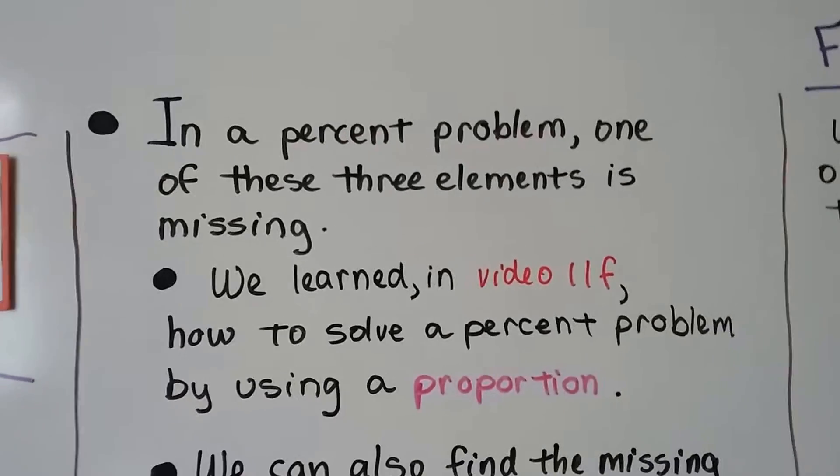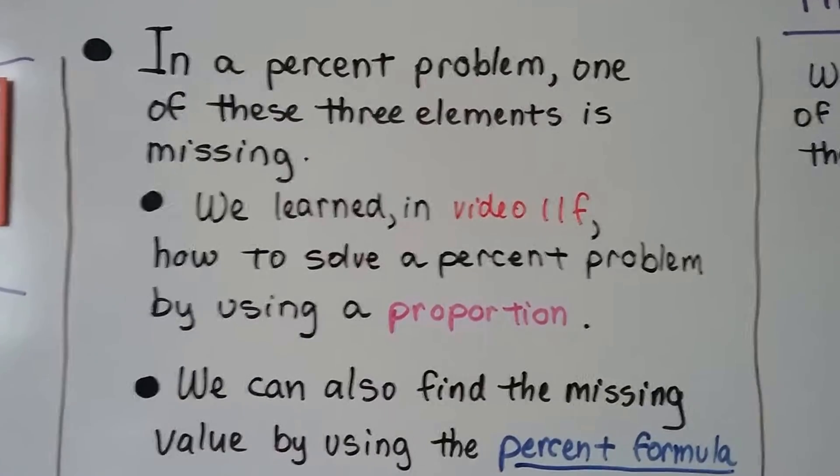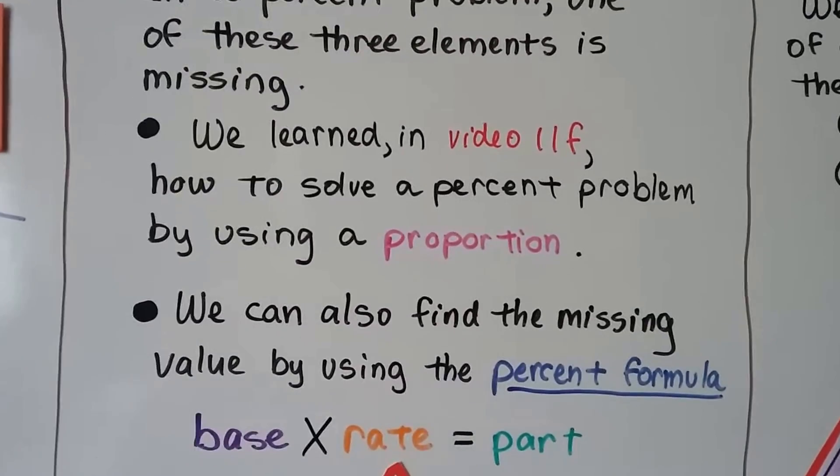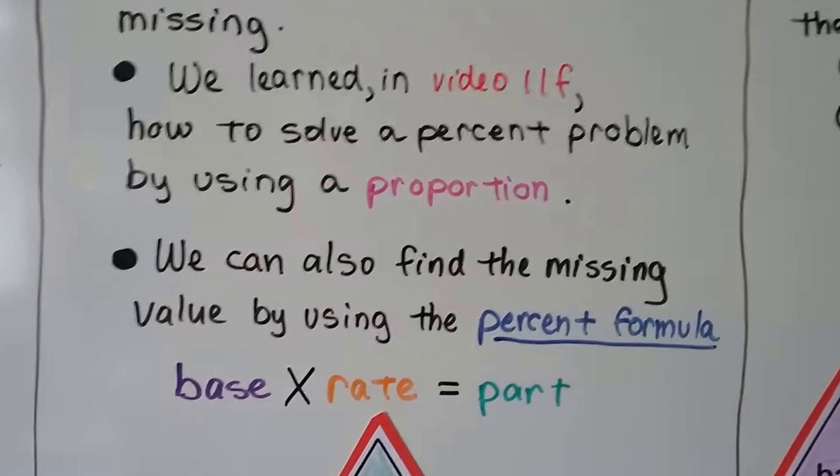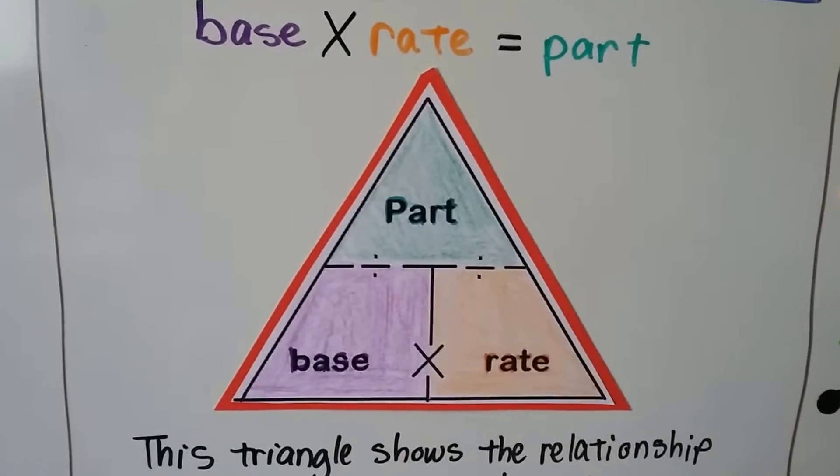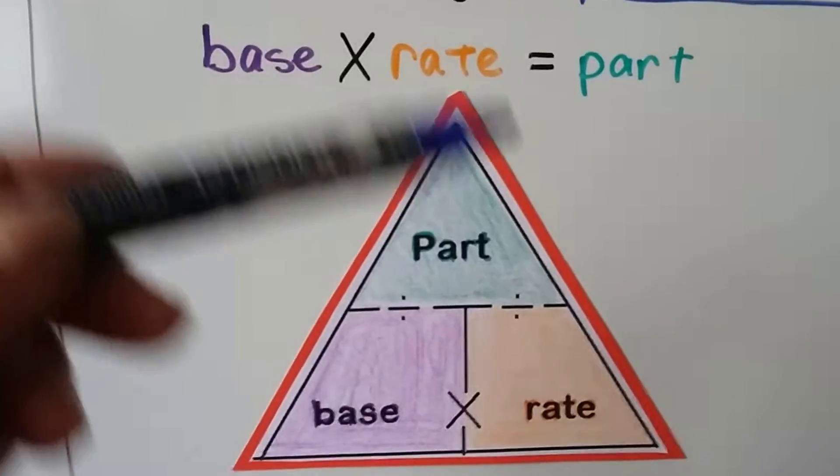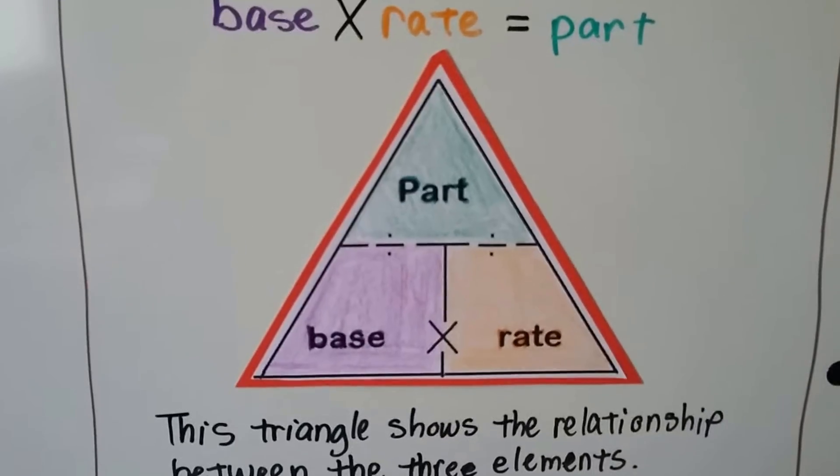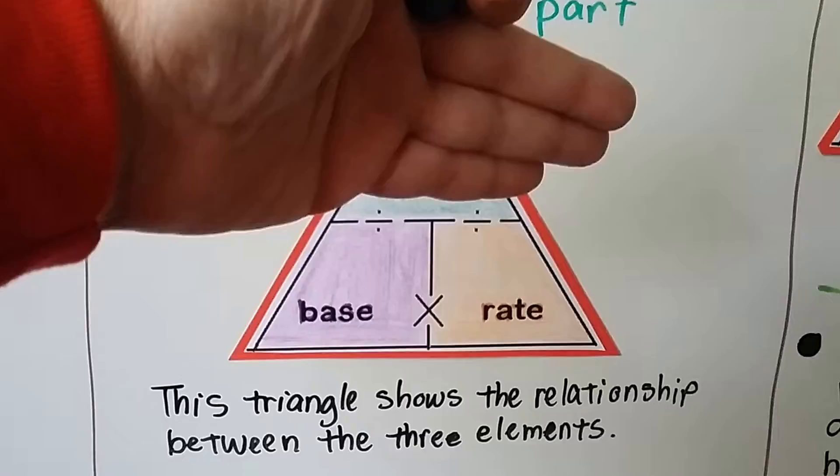In a percent problem, one of these three elements is missing. We learned in video 11f how to solve a percent problem by using a proportion. We can also find the missing value by using the percent formula. It's base times rate equals part. We have this handy little triangle to help us, and you've got one in the book. Mine's prettier and more colorful. So we know that our part is going to be green, our rate is orange, and our base is purple, so they're color-coordinated. If a part is missing, then we cover this on the triangle, and we can see that we need to do base times rate.